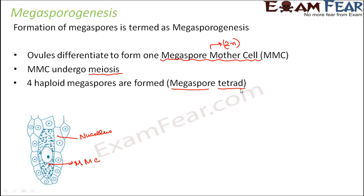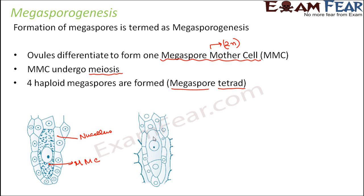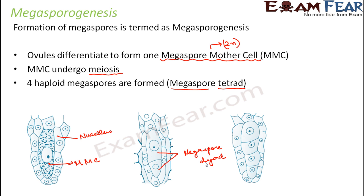This is very similar to how microsporogenesis took place. So if you see the diagram, this was just one cell — the megaspore mother cell. Now two cells have been formed, so this is known as the megaspore dyad — 'di' means two. And gradually on the next step there will be four cells formed, and these are called the megaspore tetrad.